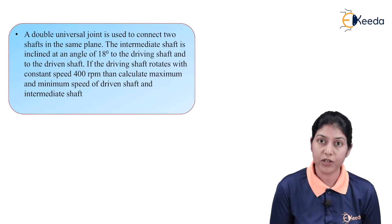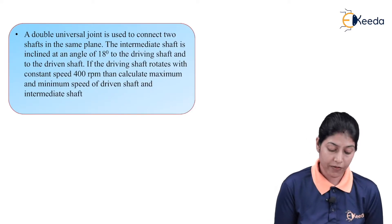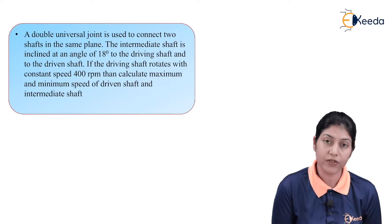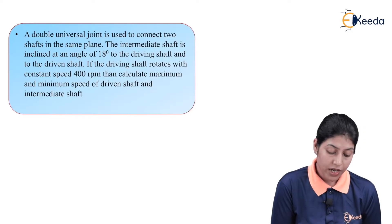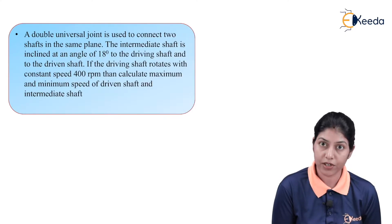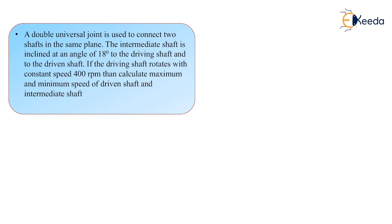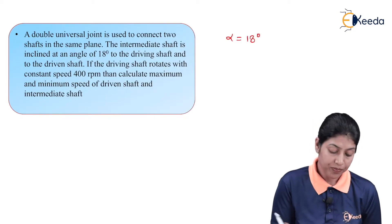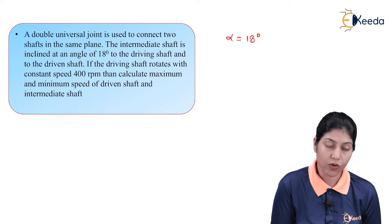This numerical is related to the double Hooke's joint or double universal joint. Here it is given that the double universal joint connects two shafts in the same plane, and the intermediate shaft is at an angle of 18 degrees to both the driving shaft and the driven shaft. So the value of alpha is 18 degrees, and the driving shaft rotates with a constant speed of 400 RPM.